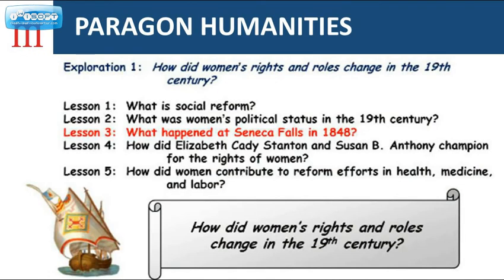Beyond social studies and humanities, Paragon Humanities is a learning platform where students participate in immersive learning experiences to learn about the history of great ideas and heroes throughout time and place. With each unit, students will explore an essential question similar to one that you see here — for example, how did women's rights and roles change in the 19th century — as well as individual lesson questions, such as what happened at Seneca Falls in 1848. Through these questions, students are encouraged to actively construct their own ideas and learning, thus making learning more personal and memorable.